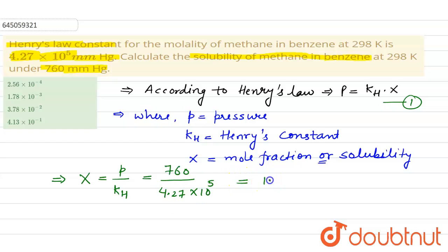On solving it, we will get 1.78 times 10 to the power minus 3. This is the solubility of gas.